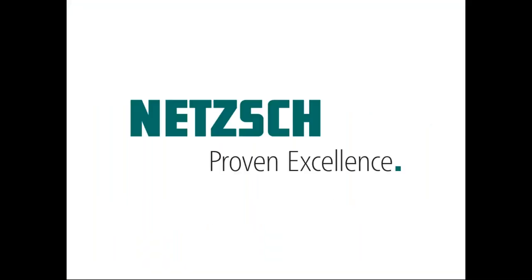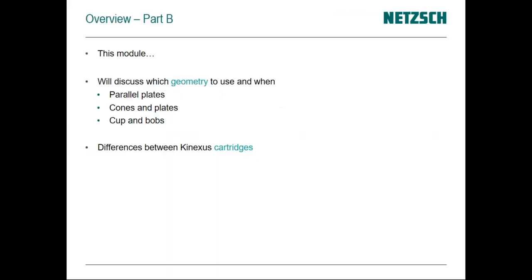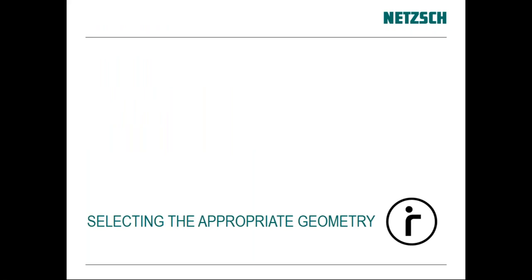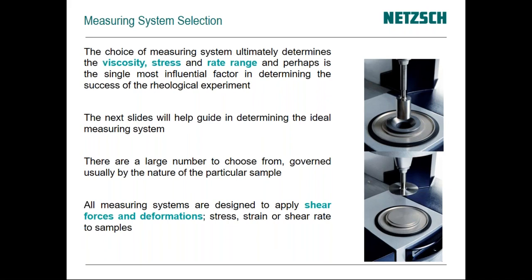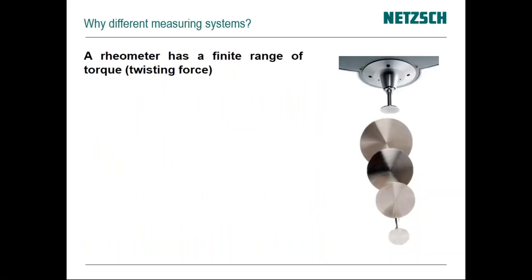Part B of module one: we're going to discuss the different measuring systems. There are different types — parallel plates, cones and plates, and cups and bobs — plus different cartridges. We'll consider which geometries are most appropriate. One of the most important decisions on the instrument is which geometry to use. Using the wrong one can hamper results, so we'll go through the pros and cons of each type so you can advise customers and choose the right measuring system.